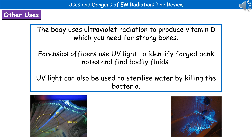Our body also uses some EM radiation. When we get ultraviolet radiation from the sun, our skin absorbs it to produce vitamin D, which is needed for strong bones and to avoid rickets. We can also use ultraviolet in forensic investigations and in shops to identify forged banknotes — you may have noticed when handing over a £20 note, they hold it under a UV light to check it's not fake. Forensics officers can also use UV to detect body fluids even after cleaning. Additionally, UV can be used to sterilise water because it kills bacteria present.